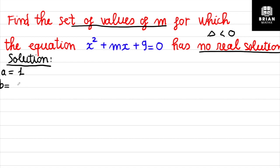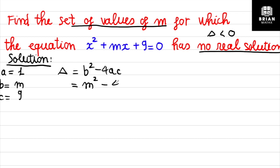For this quadratic equation, a = 1, b = m, and c = 9. The discriminant is b² − 4ac = m² − 4(1)(9) = m² − 36. We need this discriminant to be less than zero.